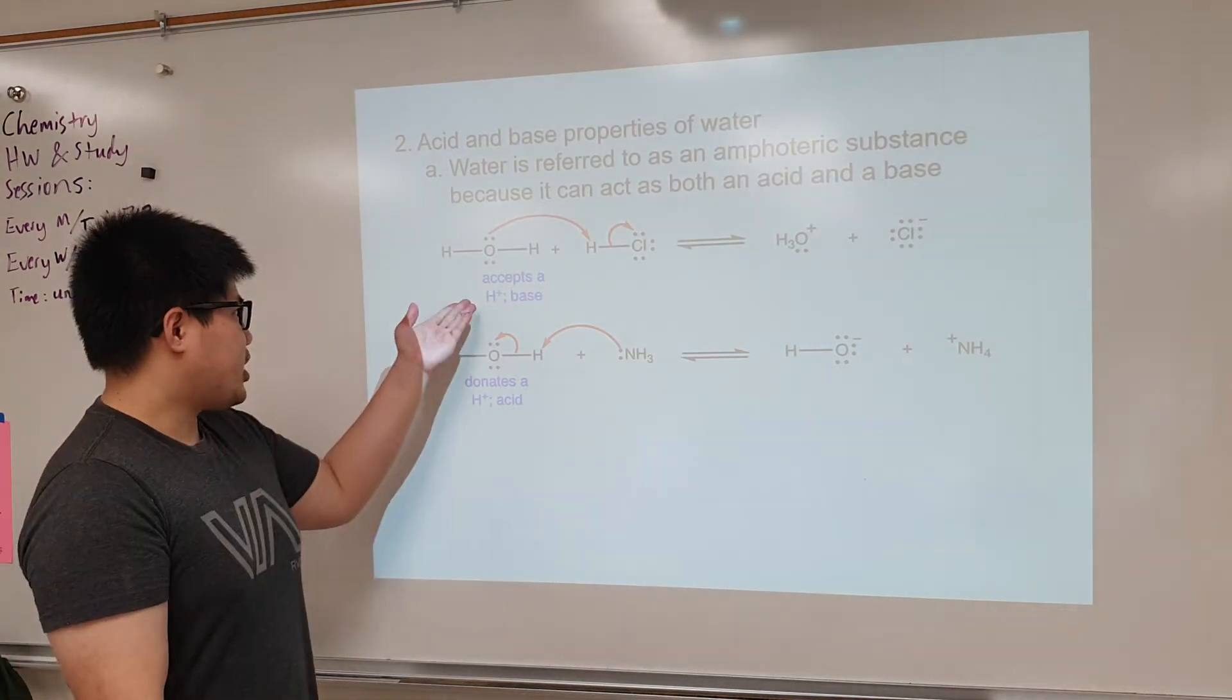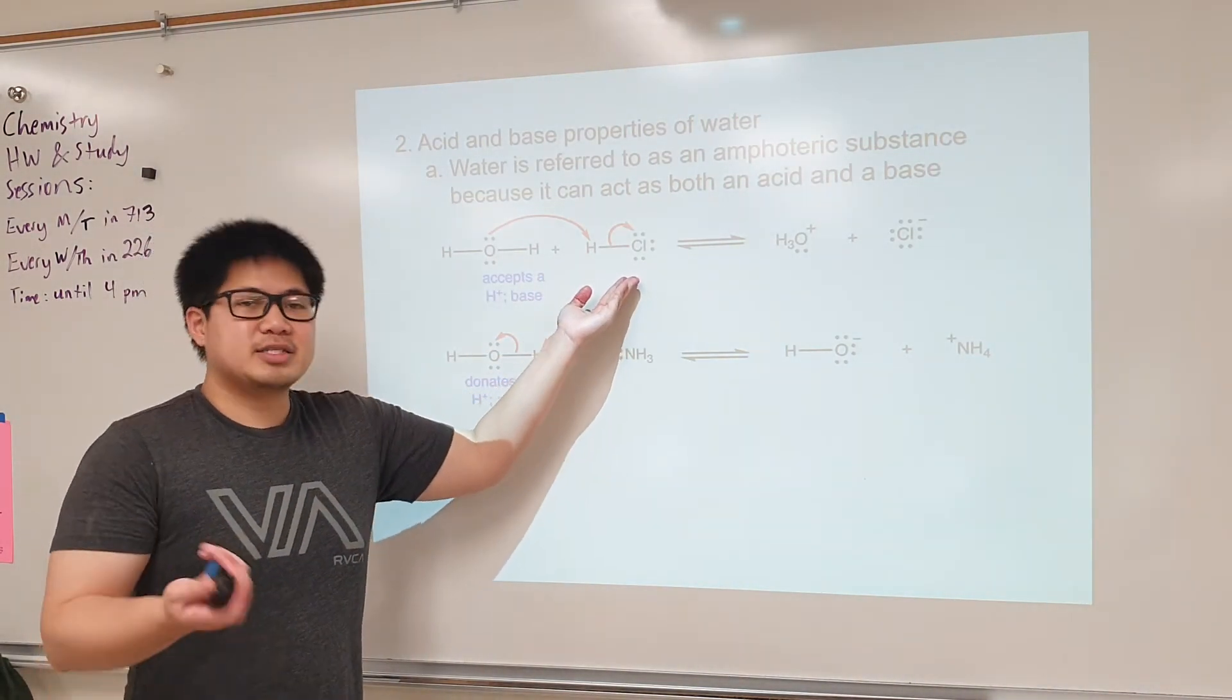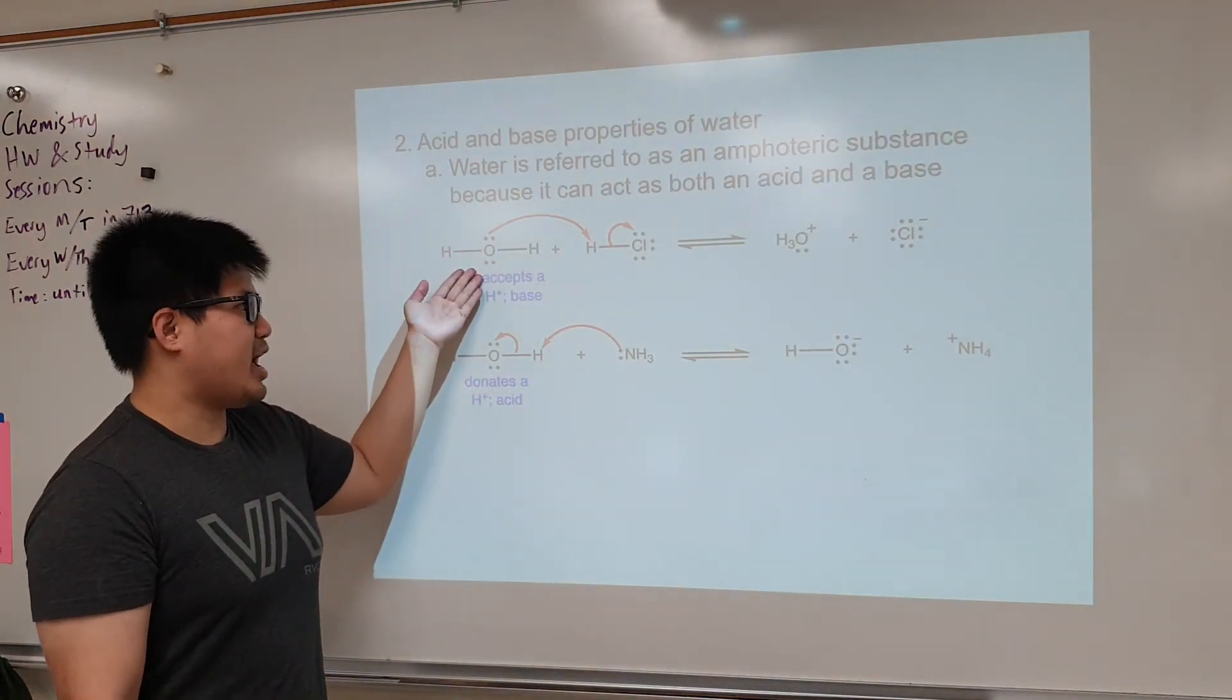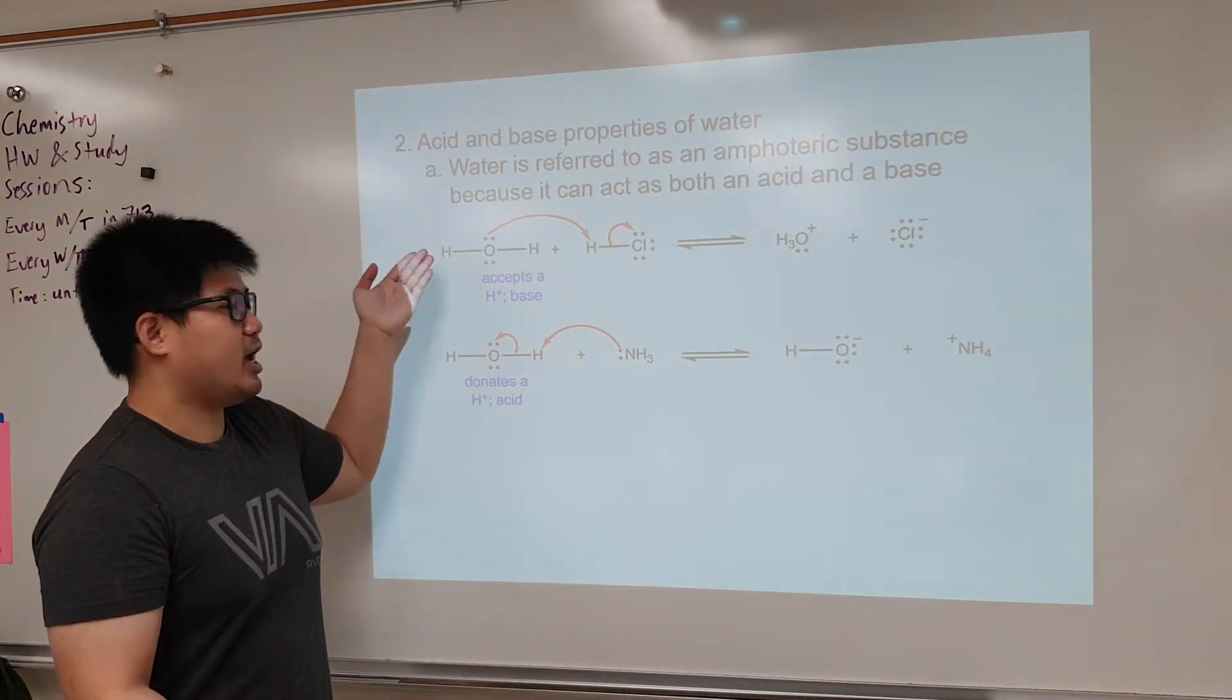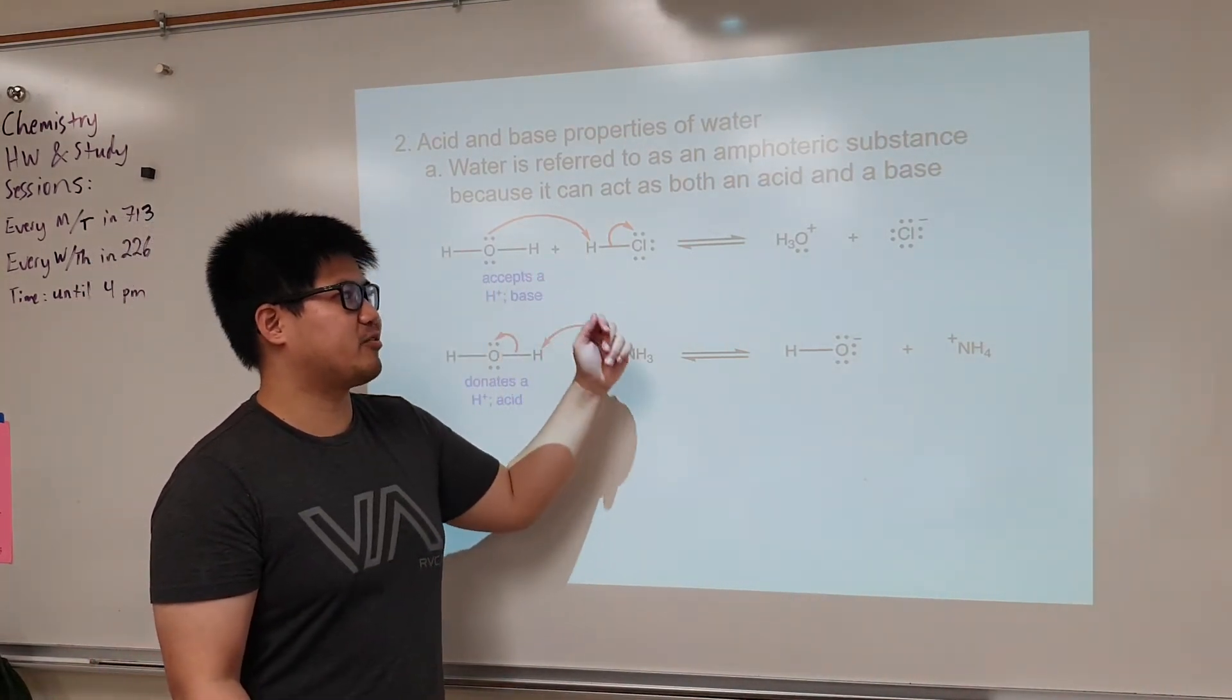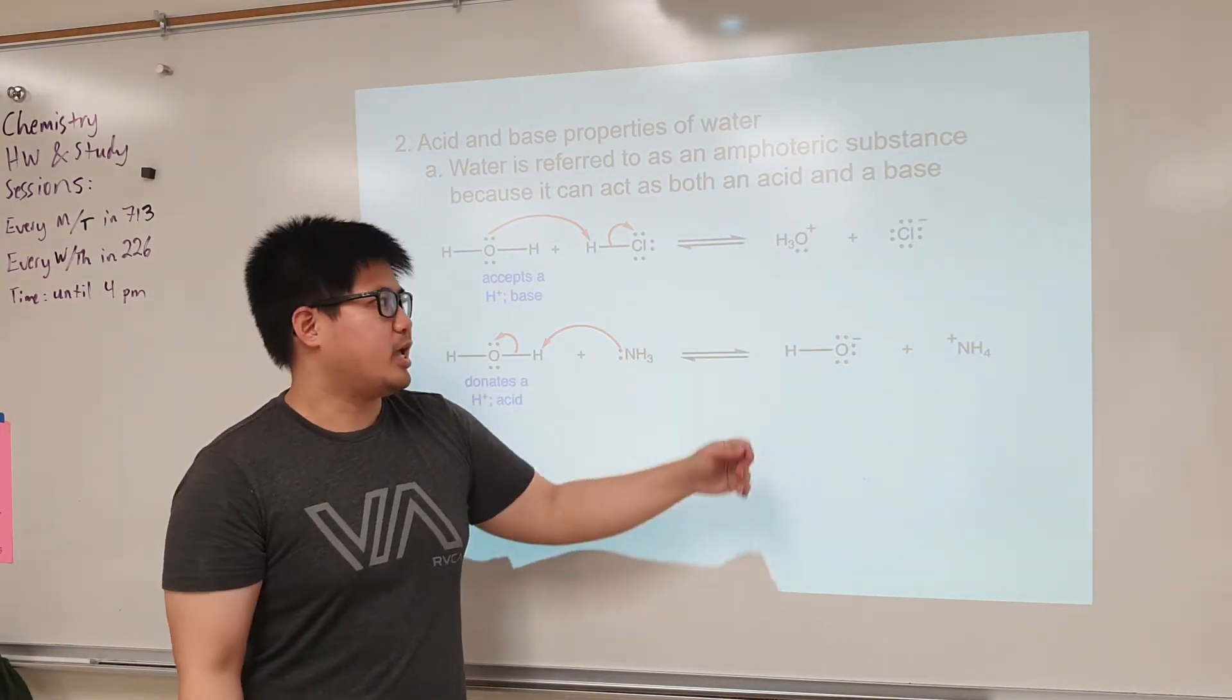For example, if water, our amphoteric substance, is going to react with an acid such as hydrochloric acid, it's going to accept the proton from hydrochloric acid. This is going to act as our acceptor, our base. Water is going to take in that proton from hydrochloric acid to turn into hydronium, H3O+.